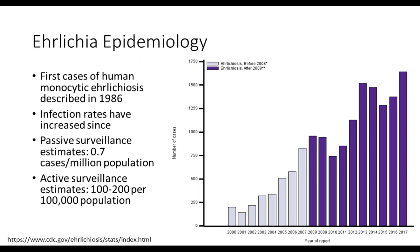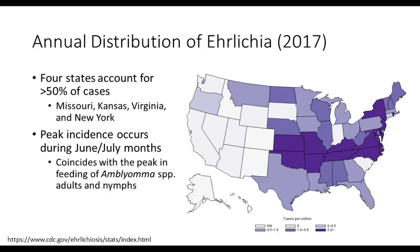The first cases of human monocytic ehrlichiosis were described all the way back in 1986. Infection rates have steadily increased since then, based on CDC data. When monitoring using passive surveillance techniques, we had an estimated 0.7 cases per million population. However, with more active surveillance techniques such as mandatory reporting in some states, we're seeing about 100 to 200 cases per 100,000 population, and detection rates continue to rise.